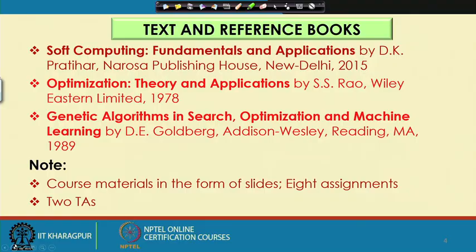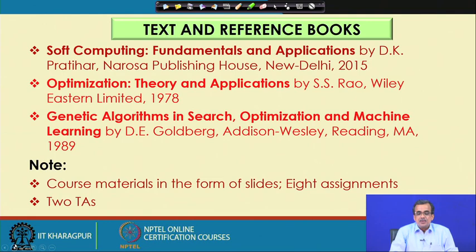Regarding the text and reference books, the first one is Soft Computing Fundamentals and Applications by D.K. Pratyar, which will be the textbook for this particular course. There are two reference books: the first one is Optimization Theory and Applications by S.S. Rao, and the second one is Genetic Algorithm in Search, Optimization and Machine Learning by D. Goldberg. This course will be very helpful if you are going to design and develop new optimization tools, further modify existing optimization tools, or solve some very complex real-world optimization problems.